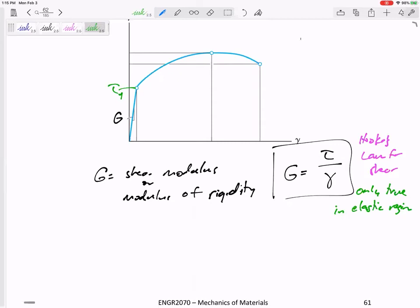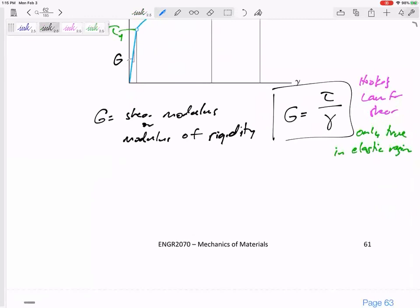But anyway, G is kind of, or Poisson's ratio kind of links axial or normal with shear diameter or diameter. Here's an equation we should know.